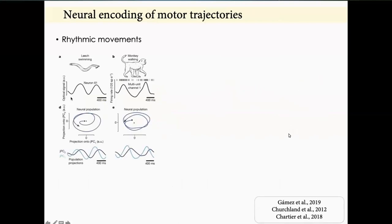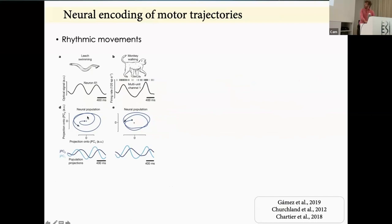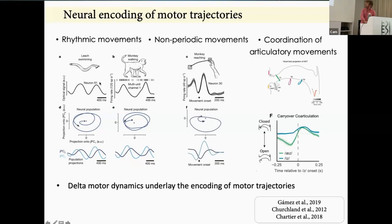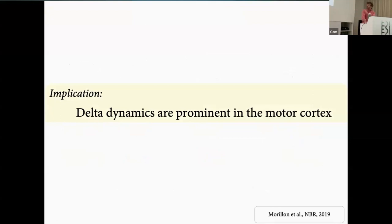People who study movements use trajectory representations — recording multi-unit activity, doing PCA, extracting the manifold, and exploring how the trajectory encodes specific movements. They see beta bursts appearing at different moments of the trajectory encoding the specific movement. What's interesting is that this trajectory occurs at a scale of two hertz — one cycle is 500 milliseconds, circling continuously. This is true for rhythmic movements, but even true for non-periodic and articulatory movements in humans. So these delta dynamics — not much studied in the motor system — are robustly represented in motor cortex activity. There's a range of dynamics in the delta band, not only the beta band.